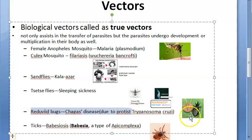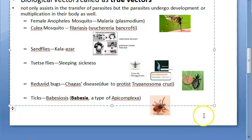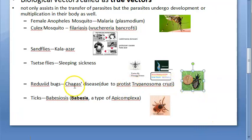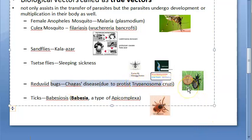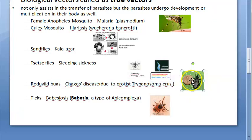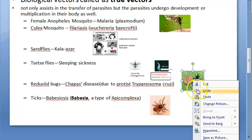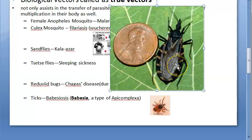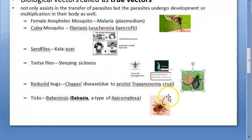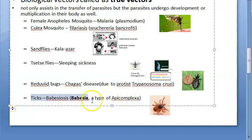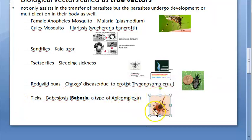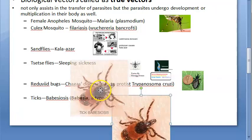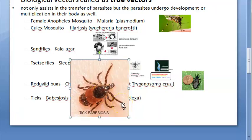Reduviid bugs transmit Chagas disease, caused by Trypanosoma cruzi. If you want to see a reduviid bug, this is a reduviid bug. Ticks transmit babesiosis, caused by Babesia, which is an Apicomplexa protozoa. This is a tick — it transmits babesiosis.